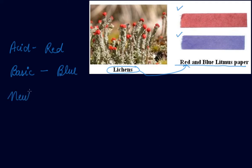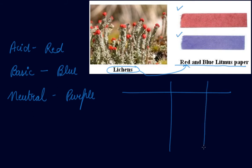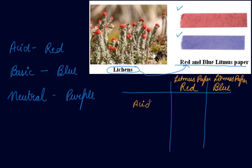In a neutral solution, litmus turns purple. You have two types of litmus paper: red color litmus paper and blue color litmus paper. There are three types of substances to check: acid, base, or whether they are a salt, which is neutral.